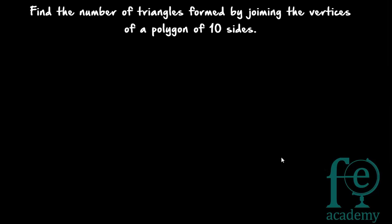Hi friends, welcome to today's class. Today's question is: find the number of triangles formed by joining the vertices of a polygon of 10 sides. There is a polygon of 10 sides and you are asked to find out how many triangles can be formed by joining the vertices of the polygon.